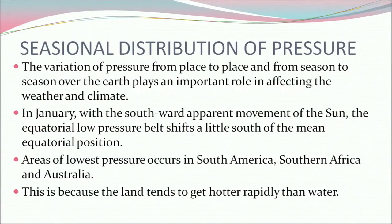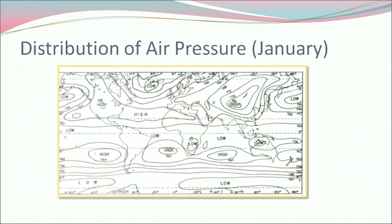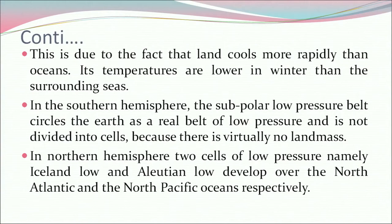Now let's study the seasonal distribution of pressure. The variation of pressure from place to place and season to season plays an important role in affecting the weather and climate. In January, with the southward apparent movement of the sun, the equatorial low pressure belt shifts a little south of the mean equatorial position. Areas of lowest pressure occur in South America, southern Africa, and Australia, because land tends to get hotter rapidly than water. Land also cools more rapidly than oceans — temperatures are lower in winter than the surrounding seas. In the southern hemisphere, the subpolar low pressure belt circles the earth as a real belt and is not divided into cells, because there is virtually no landmass. In the northern hemisphere, two cells of low pressure — the Iceland low and the Aleutian low — develop over the North Atlantic and North Pacific oceans respectively.